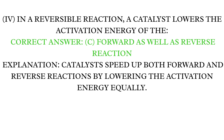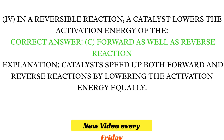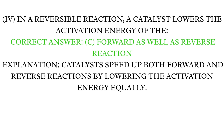MCQ 4: In a reversible reaction, a catalyst lowers the activation energy of the... Correct answer: C — Forward as well as reverse reaction. Explanation: Catalysts speed up both forward and reverse reactions by lowering the activation energy equally.